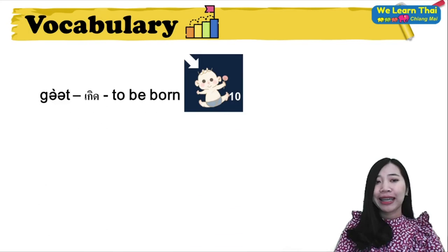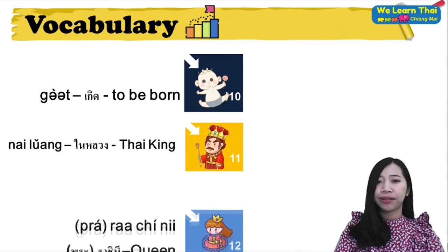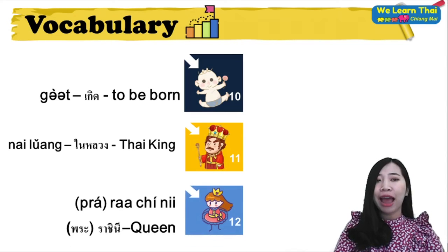Phradet Thai means Thai flag. Prachachon or you can say ratsadon means citizens.